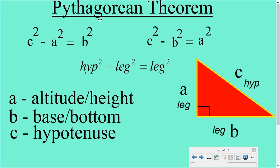You remember the Pythagorean Theorem, a squared plus b squared equals c squared, but now we're finding a side instead of the hypotenuse. So the formula now is going to be c squared minus a squared equals b squared, or c squared minus b squared equals a squared, or we could even use hypotenuse squared minus leg squared will give us the other leg squared.